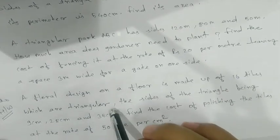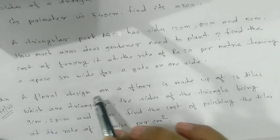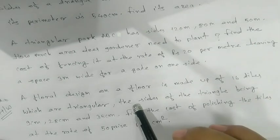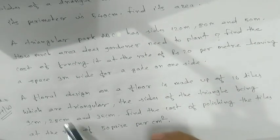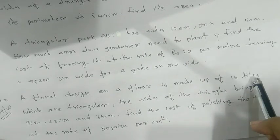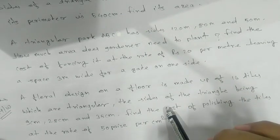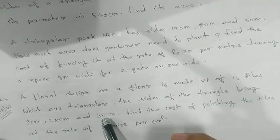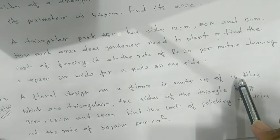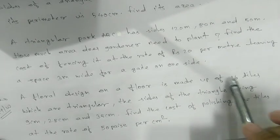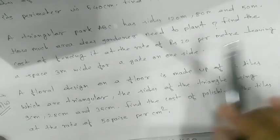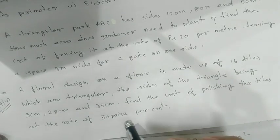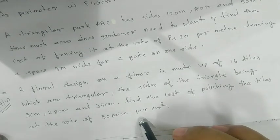So after finding the perimeter excluding your gate will multiply with the 20 will get our required cost. So how are we going to do this one? Same concept. A floral design on a floor is made up of 16 tiles which are triangular. The size of triangular being 9 cm, 28 cm, 35 cm. That means 16 tiles has been given which are in triangular shape. Find the area of one tile using Heron's formula because you have three sides here. After that, multiply with the 16. After multiplying with the 16, you will get total area. And then convert 50 paisa in Rupee, 0.50. And then you multiply, you will get the answer.